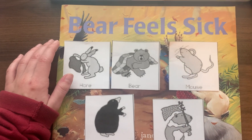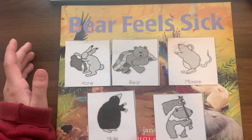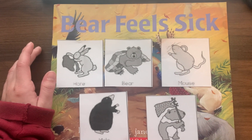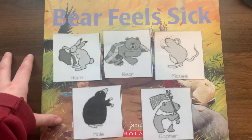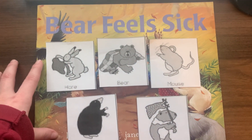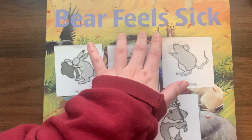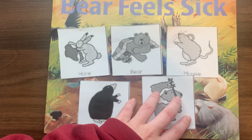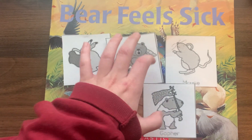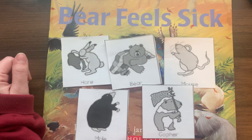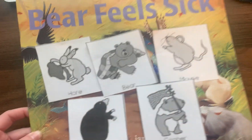I will separate the students into groups, and each group will get a certain character from the story. Throughout the story, when the groups hear their character's name, they'll raise the character's picture up in the air. This allows me to tell which groups are not paying attention and which groups are engaged in the story. Groups of students will be assigned a character, and throughout the story, they'll hold up their character as they hear it presented.